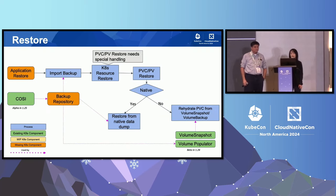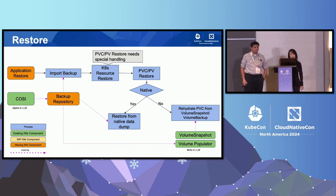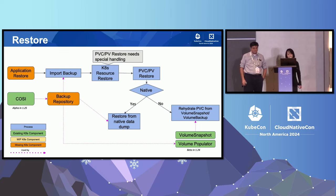This shows the restore workflow with the existing and missing building blocks in Kubernetes. To do a restore, first we need to import the backup from the backup repository. Then we need to restore the Kubernetes metadata and the PVC and PV. Depending on how the volume was backed up, if it's backed up natively, we need to restore from the native data dump. Otherwise, we need to rehydrate the PVC from a volume snapshot or volume backup.